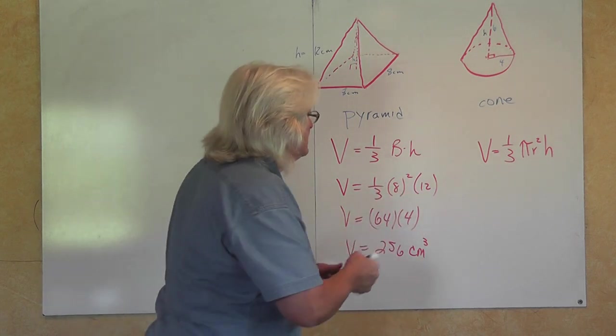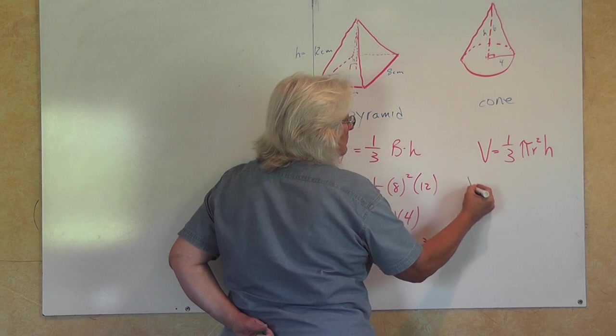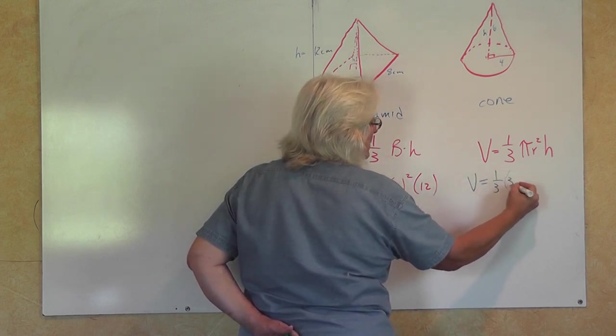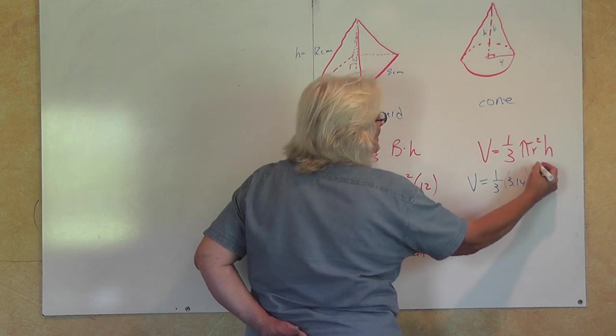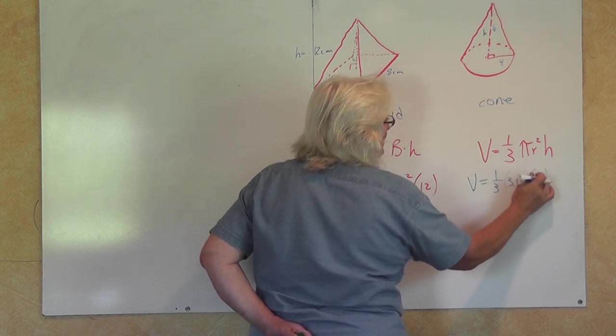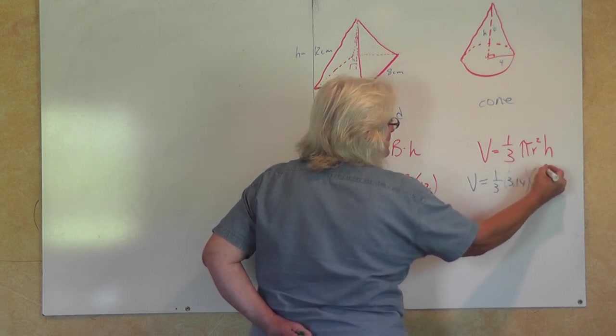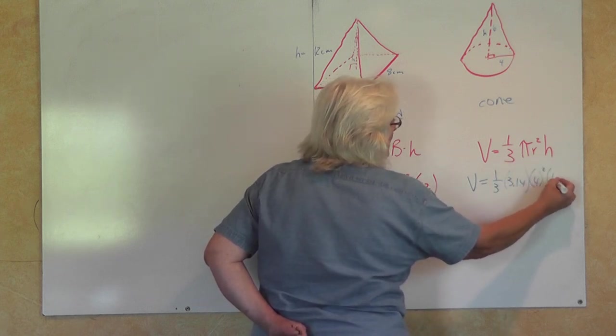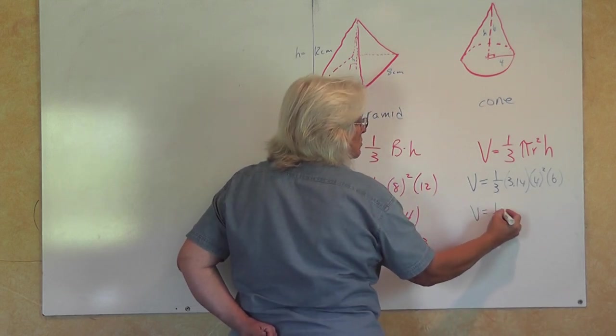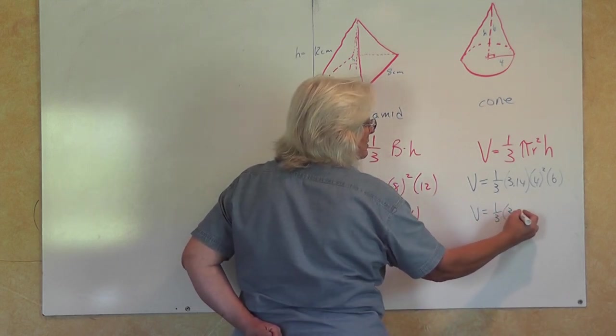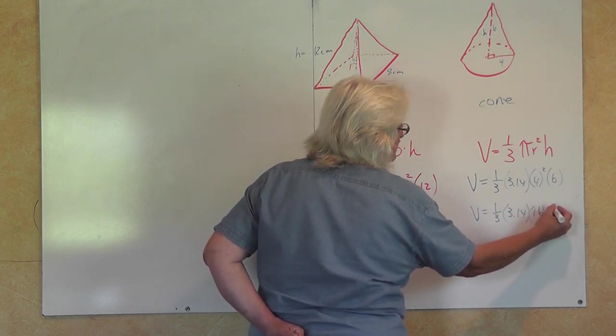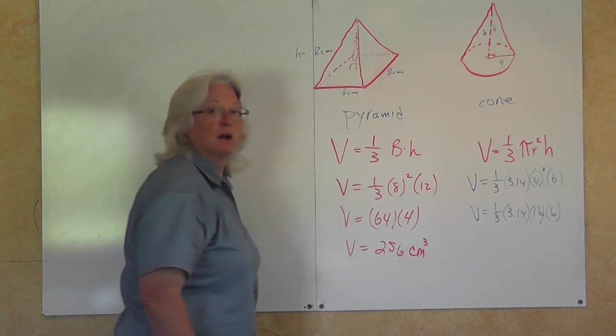So let's just go ahead now and plug in these values. Volume is equal to one-thirds pi, and we know that pi is 3.14 times the radius squared times the height, which is six. So our volume is one-third times pi times 16 times 6.